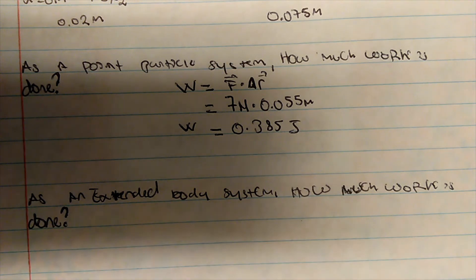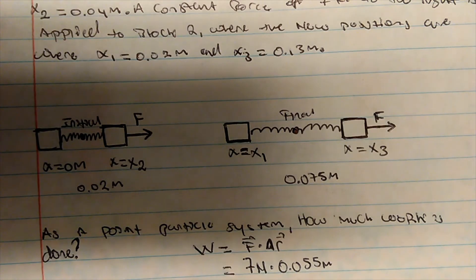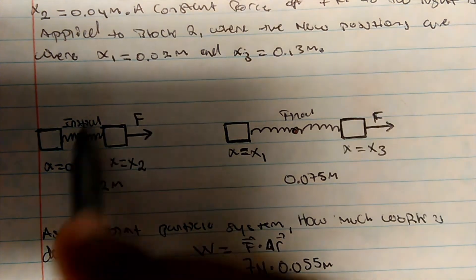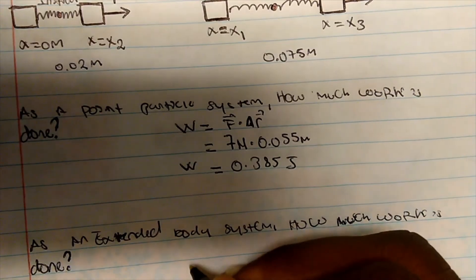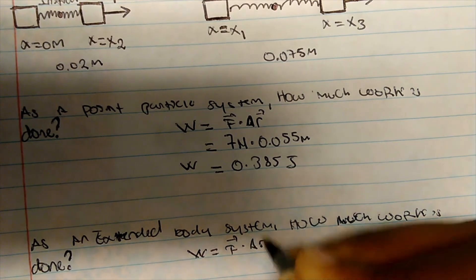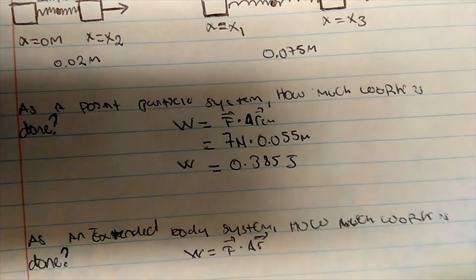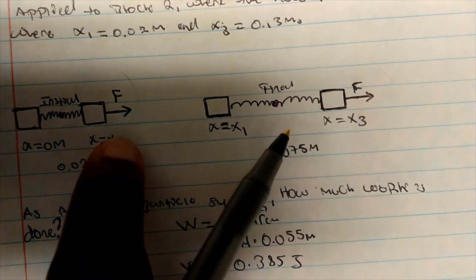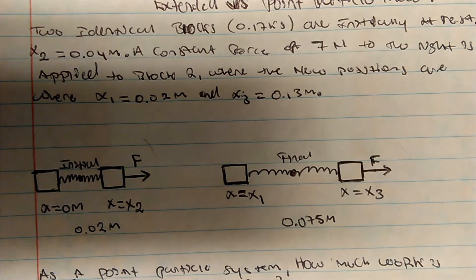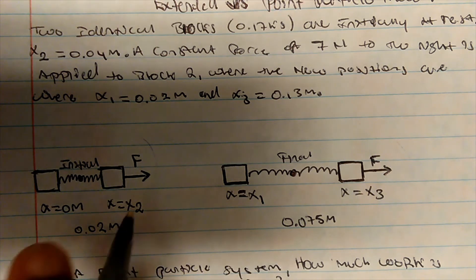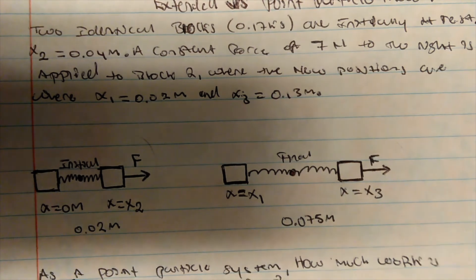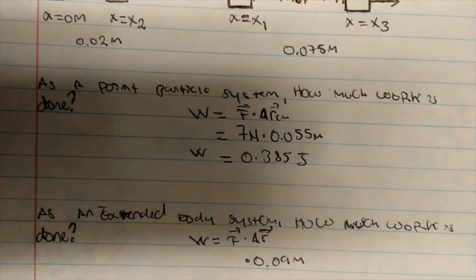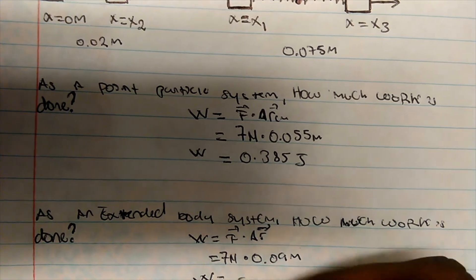As an extended body system, how much work is done? Now it's different — we care about where the force is being applied, exactly where the force is being applied. The force is being applied to block two. So as an extended body system, we take x3 minus x2 because we care about where the force is applied: 0.13 minus 0.04 gives us 0.09 meters. With the force of seven newtons, we get 0.63 joules.